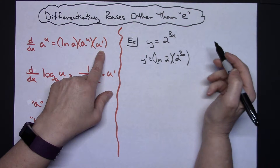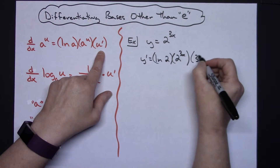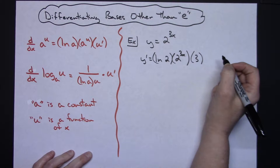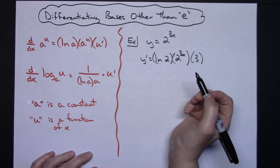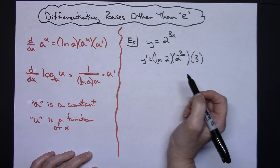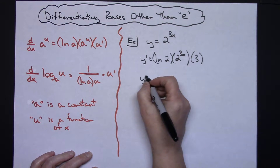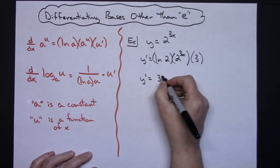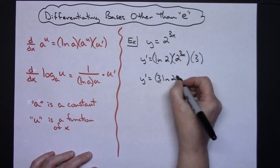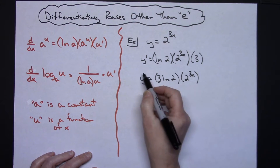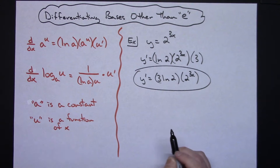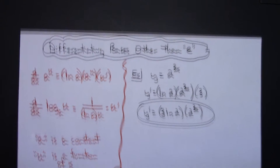The derivative of 3x is 3. Since that's just a plain constant out here, I might pull it out in front and write: y prime equals 3 times natural log of 2 times 2 raised to the 3x. That's really just a simple implementation of that first formula.